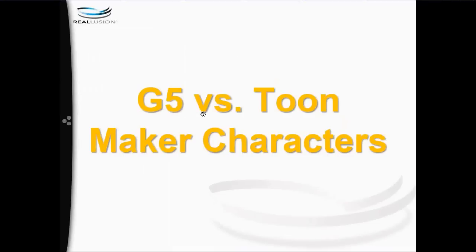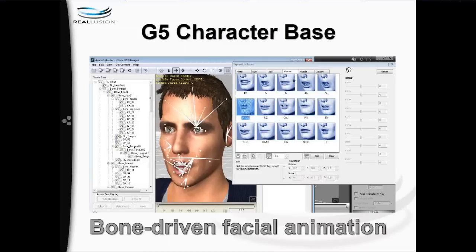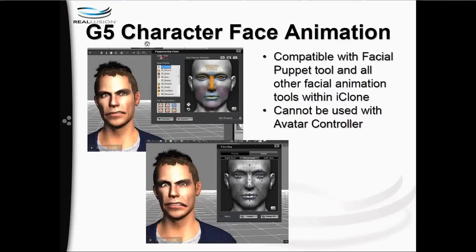Let's look at the difference between G5 and ToonMaker characters. G5 characters have bone-driven facial animation — you can see the white lines throughout Chuck's face in 3D Exchange, which are facial bones. Many G5 characters use facial bones to puppet their faces and create facial animation. G5 characters are also compatible with facial puppet tools and all the other facial animation tools in iClone. Keep in mind that G5 character faces cannot be used with the Avatar Controller — the Avatar Controller is unique to ToonMaker characters and props.